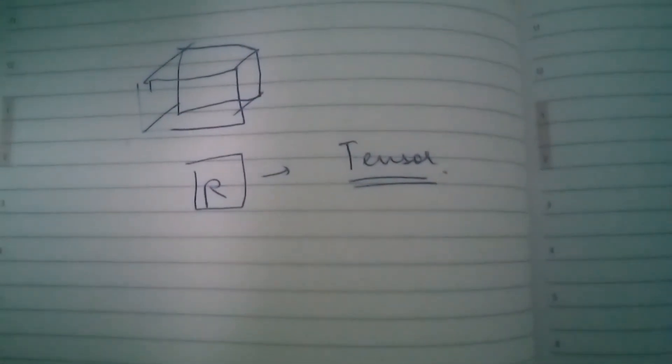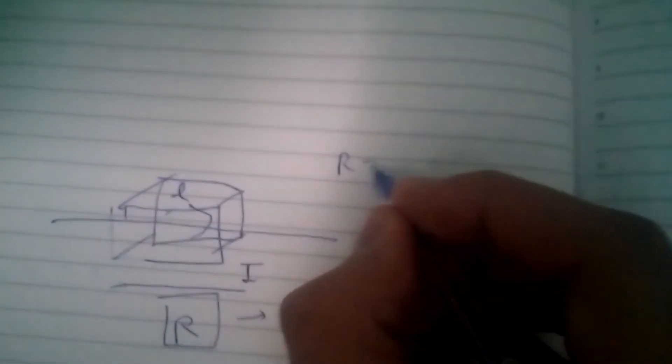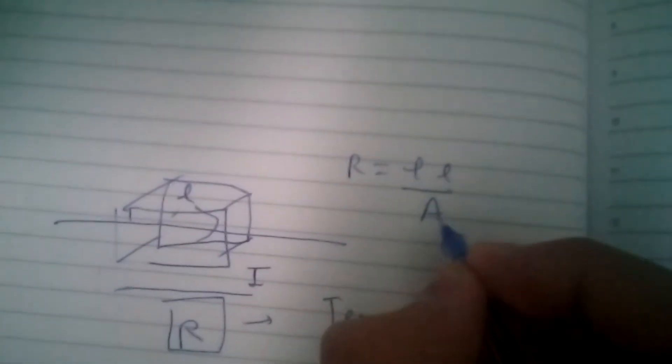A tensor quantity has two vectors. It has different values with different directions. For example, current is flowing through here in this direction I, and the length is this. The resistance which will be calculated will be rho L by A.